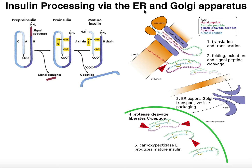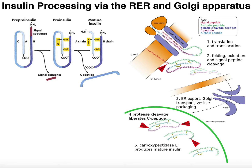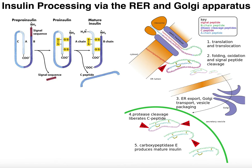The secretory system includes the endoplasmic reticulum, particularly the rough ER, and then the Golgi apparatus. In the previous video, we talked about the mechanism by which the pancreatic beta cell detects glucose in the blood and then creates an insulin release proportional to that amount of glucose. The insulin was packaged into insulin granules for direct release into the blood, but getting them into the granules is a more complicated process. Now let's talk about how this actually occurs.